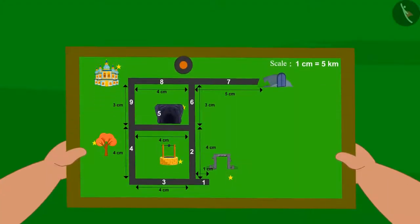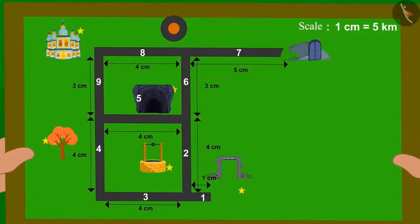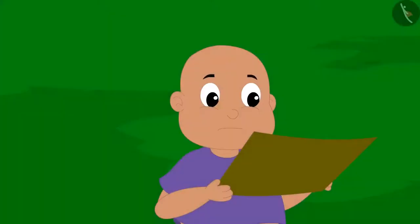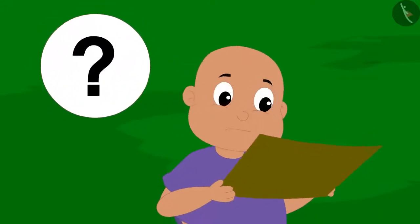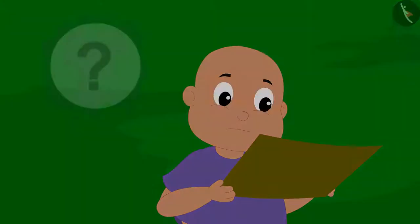Then he recalled that he has a map of the Ulta Pulta village. But Bablu did not know how to read the map. Can you help Bablu to get out of the Ulta Pulta village?